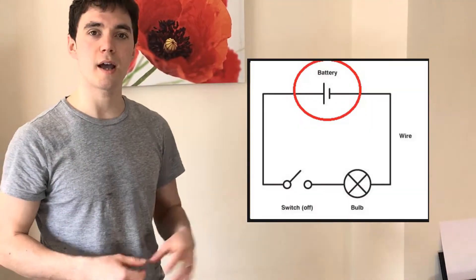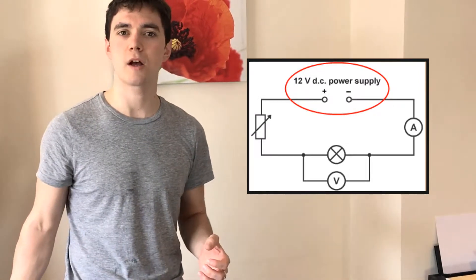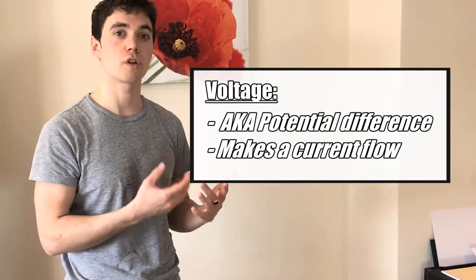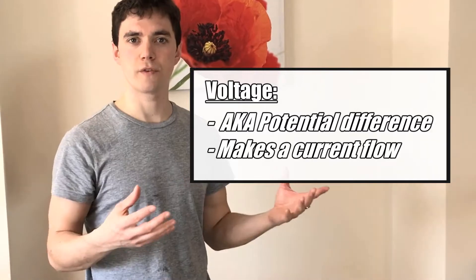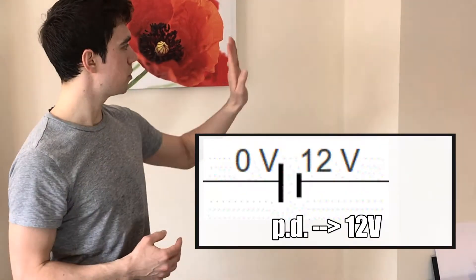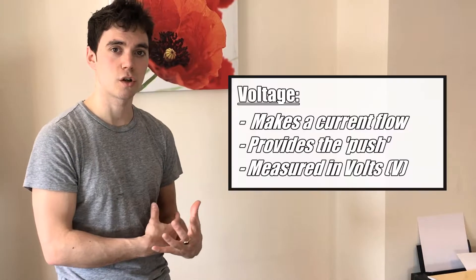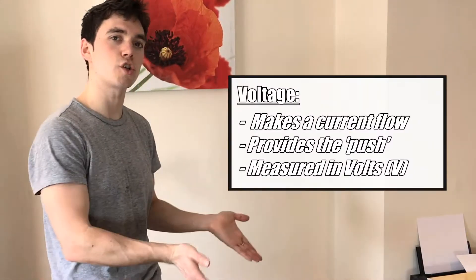Now, what makes that charge flow around the circuit? We're going to need some sort of power supply, and in most cases this is supplied by a battery or a mains power supply, which is going to give us a potential difference — also known as voltage. Potential difference and voltage, for the examples here, are exactly the same thing. It's the difference between the potential at one point and another point.